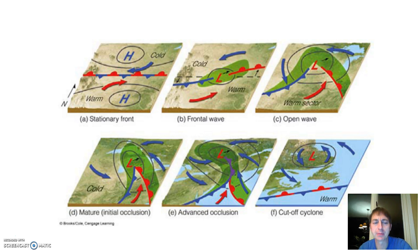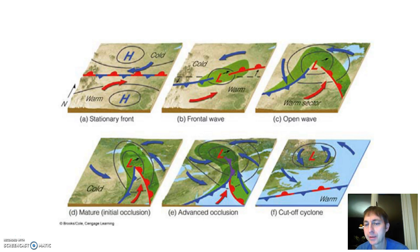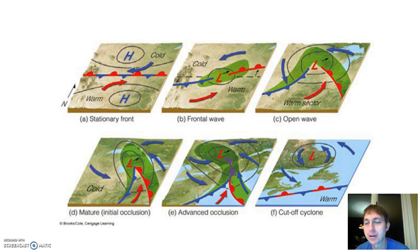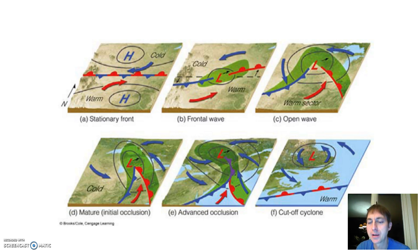Here is the recap of everything we just saw. A stationary front, due to Coriolis effect acting differently on two air masses, produces a frontal wave with both a cold front and a warm front around a center of low pressure. Because cold fronts move faster, we get an open wave stage where the cold front sweeps around catching up to the warm front. As it begins to catch up, we call that the initial occlusion stage, followed by the advanced or mature occlusion stage. Finally, it dissipates — referred to as a cutoff cyclone — leaving just a little pocket of low pressure with only slight differences in pressure remaining.